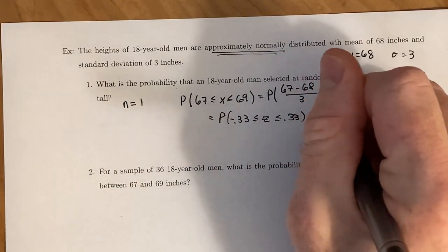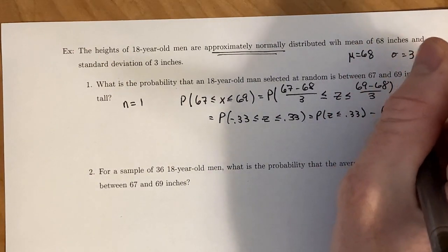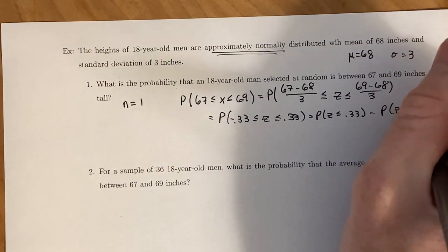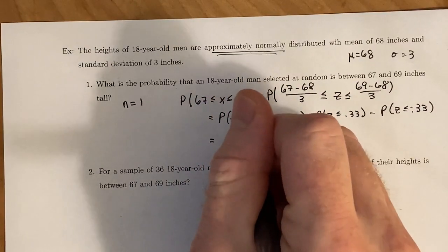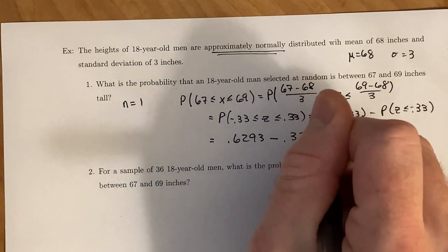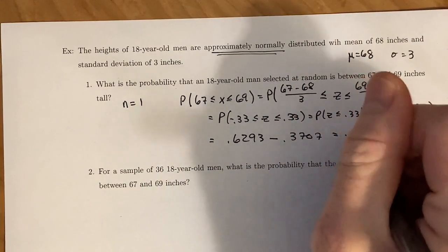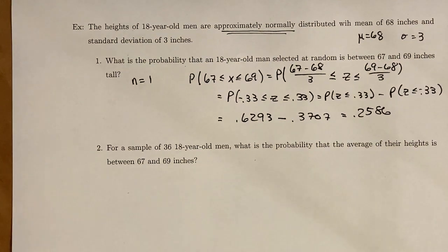And then again, this is the probability that z is less than or equal to 0.33 minus the probability z is less than or equal to negative 0.33, which going into our chart gives us 0.6293 minus 0.3707. That's 0.2586. All right, so about 26% chance that the person that you randomly select has a height between 67 and 69 inches.